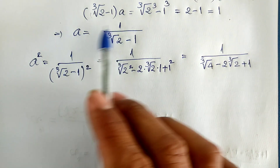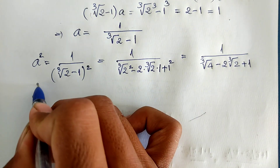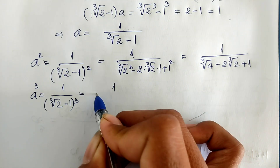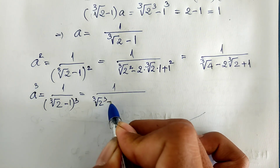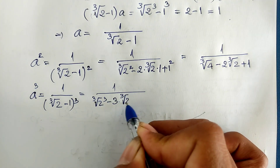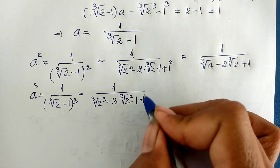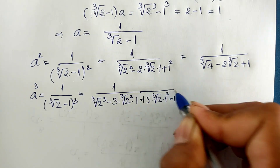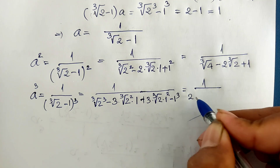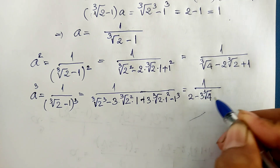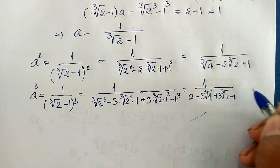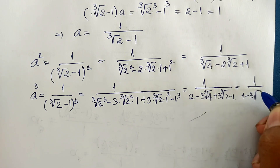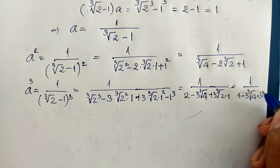Now I raise both sides to the power 3. So I get A to the power 3 equals 1 divided by cube root of 2 minus 1, all to the power 3. Expanding the denominator using the binomial cube: cube root of 2 cubed minus 3 times cube root of 2 squared plus 3 times cube root of 2 minus 1, which simplifies to 2 minus 1 equals 1 divided by 1 minus 3 times cube root of 4 plus 3 times cube root of 2.